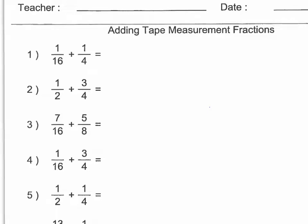Today we're adding tape measurement fractions. In order to add these fractions together, we want to take the denominator that's the smallest number, so the bottom number that's smaller, and we're going to rewrite that as an equivalent fraction with the same denominator as the first term.